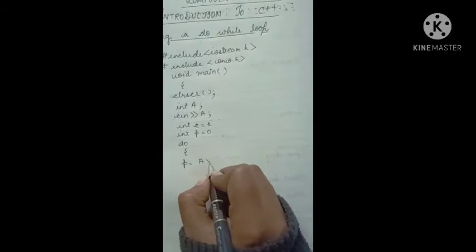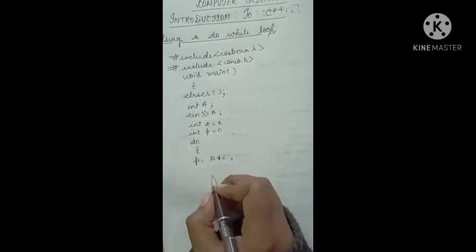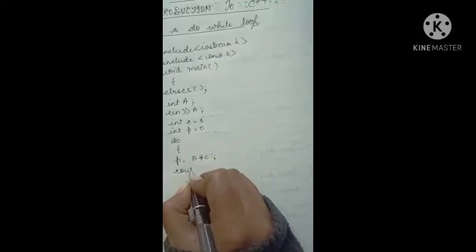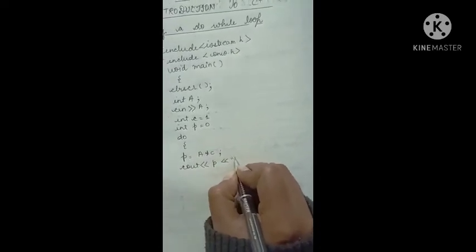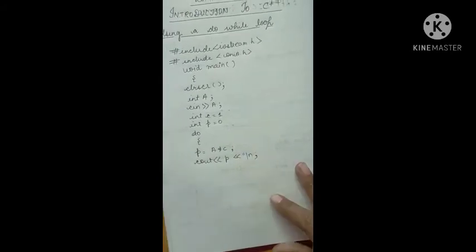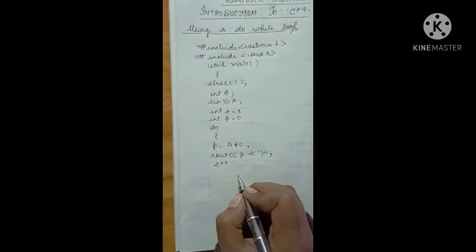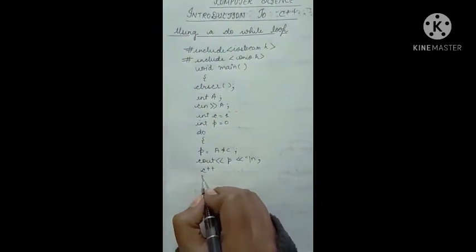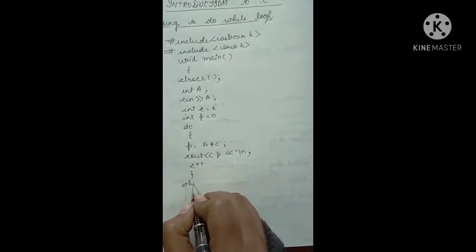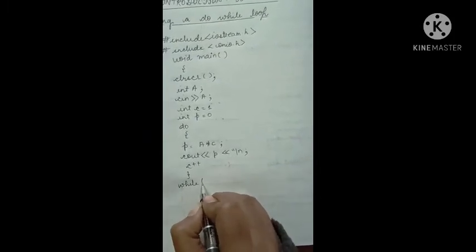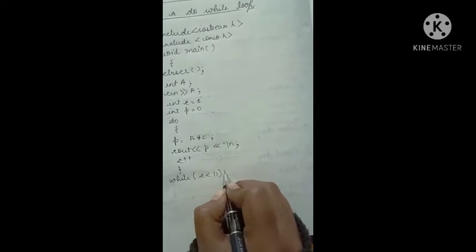Here we give a block of code. The equation is p equals a multiplied by c. Then cout p, then slash n, then c plus plus. Now we close the braces and give the while condition: c is less than 11.